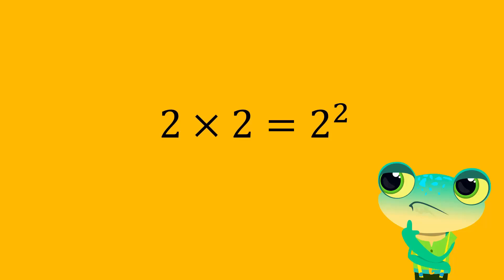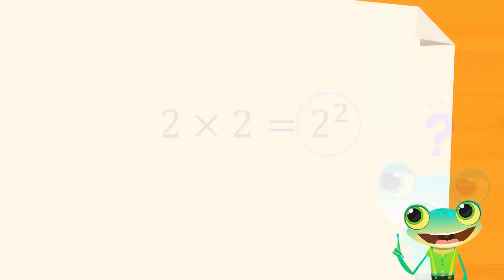Do you know why 2 into 2 is called 2 squared? This is because for a square shape with a length of 2, 2 into 2 gives the area of the square.